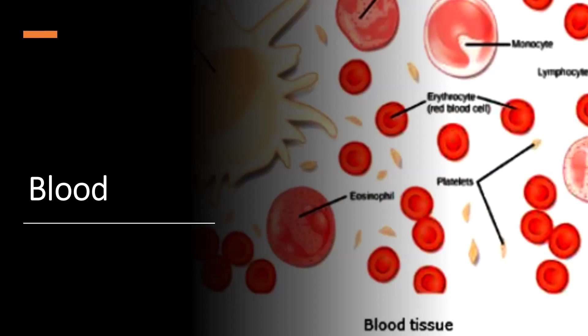Blood cells are produced within the bone marrow, which contains hematopoietic stem cells or hemoblasts. These cells give rise to other cells that differentiate into the myeloid white blood cells. There are five types of white blood cells: neutrophils, basophils, eosinophils, monocytes, and lymphocytes — you see those on blood tests all the time in the complete blood chemistry, where you'll see their ratios and the types of red and white blood cells measured.